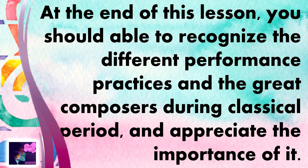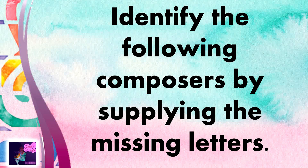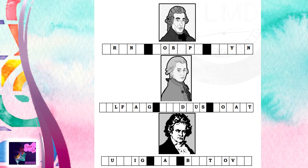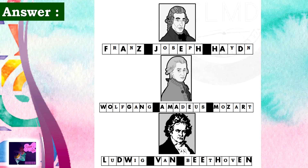Let's start with our learning task. We have to identify the following composers by supplying the missing letters. I have here our three featured composers with their complete names — some of their names have missing letters. Can you solve this to form the different complete names of our featured composers? Let's see if we have the same answer: Franz Josef Haydn, Wolfgang Amadeus Mozart, and Ludwig van Beethoven.